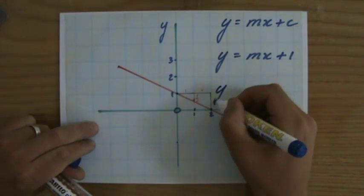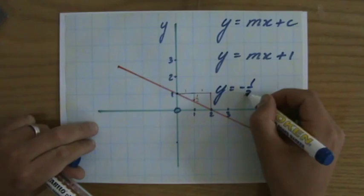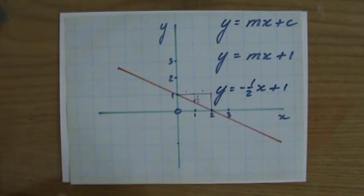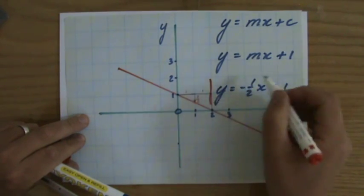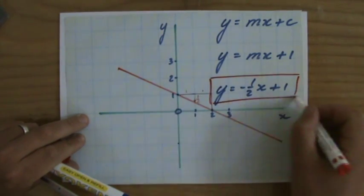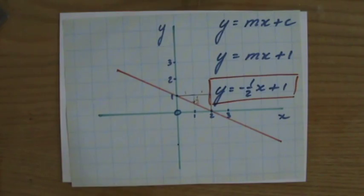So y equals minus a half x plus 1. That is the equation that belongs to this line. Y equals minus a half x plus 1, gradient intercept form. There you go. Now you try it yourself.